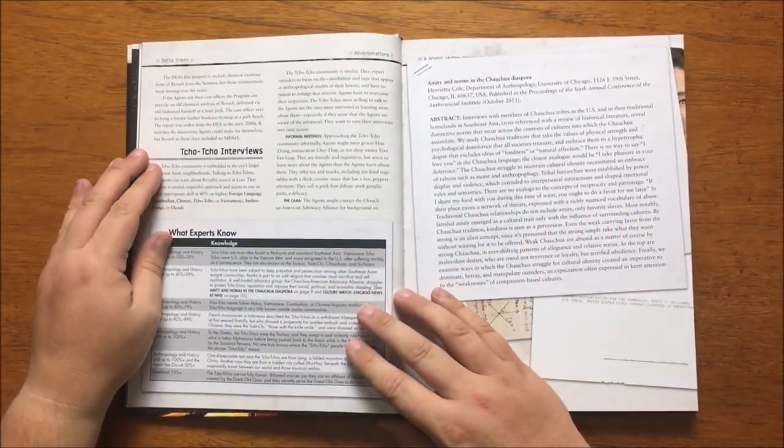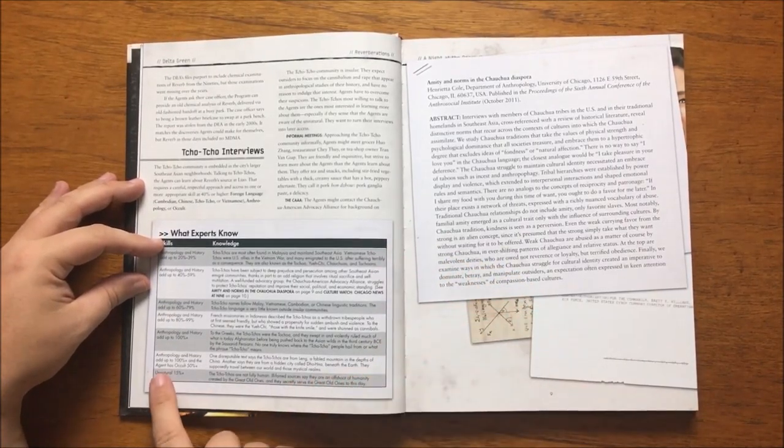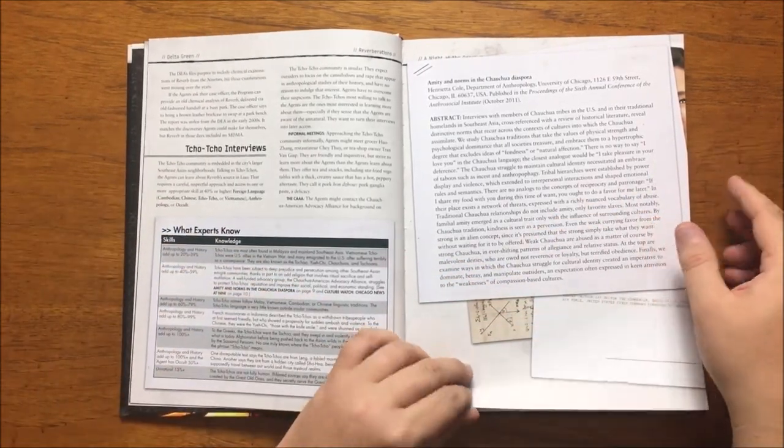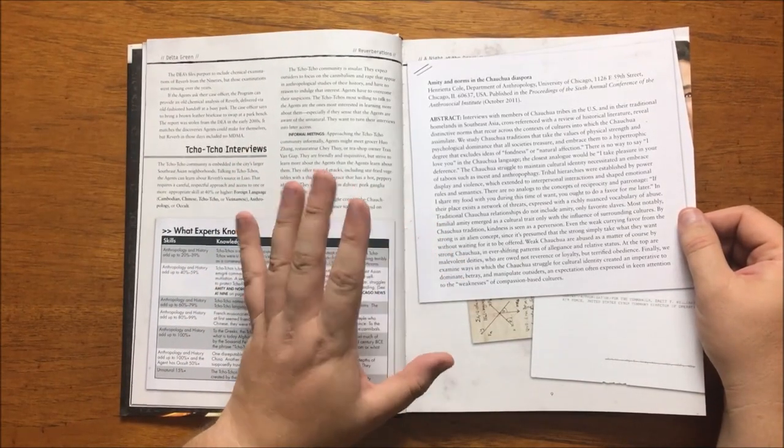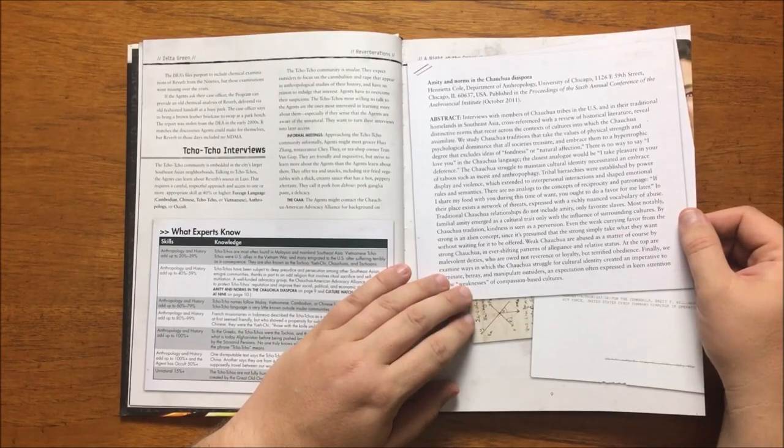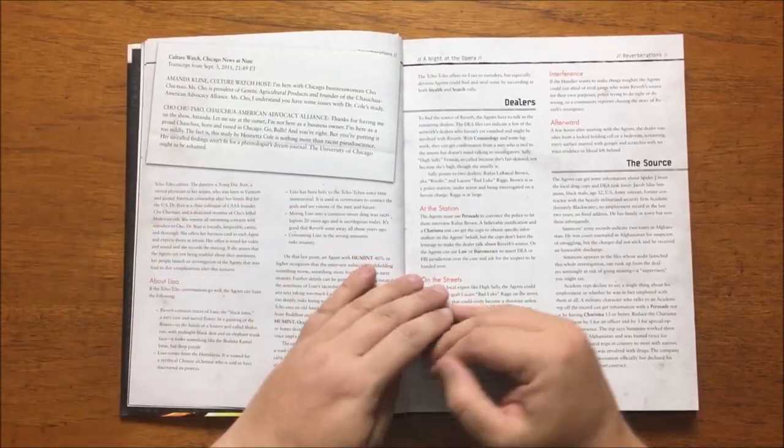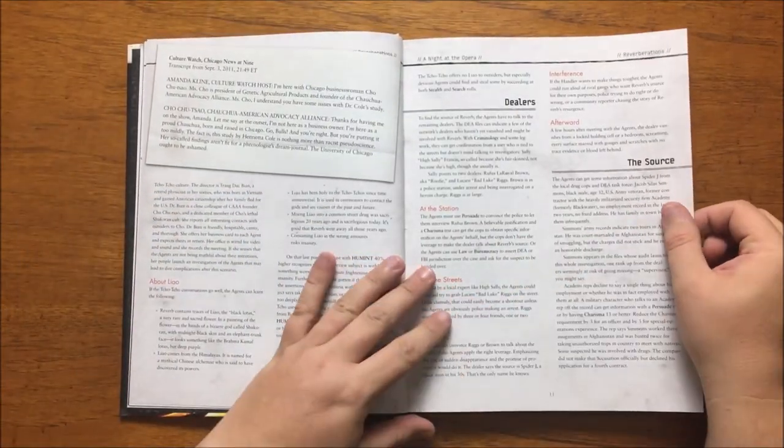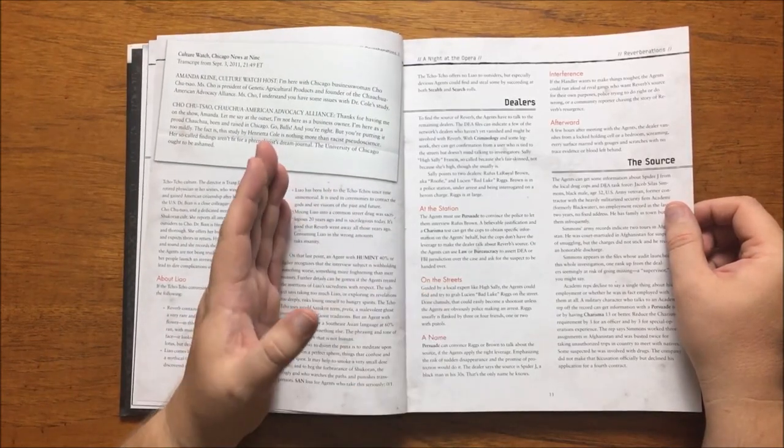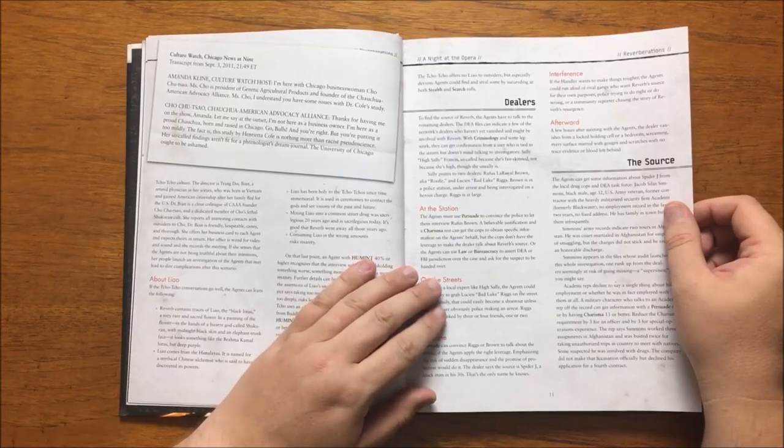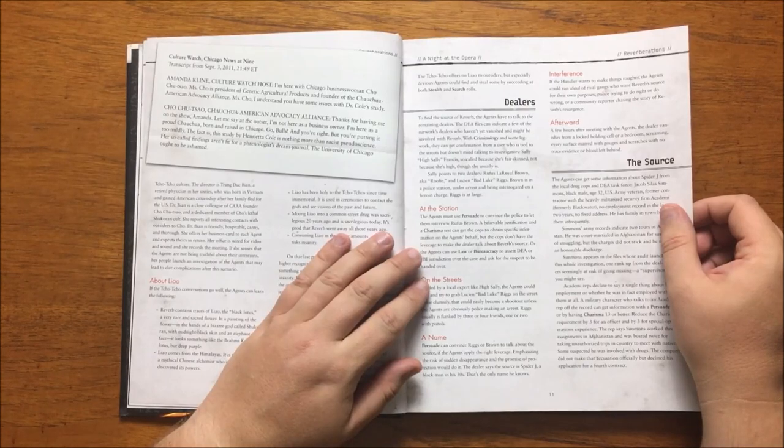Next, it moves on to the Cho Cho. It gives us a table as to what the agents know depending on both their history and anthropology skills, and also their unnatural. They also reprint a piece from the Handler's Guide about the Cho Cho, which discusses their frankly disturbing society. It gives details on obtaining an interview with people in the Cho Cho community who are insular and suspicious of outsiders. They can eventually get an interview with Trang Duk Bian, a retired doctor in her 60s. She is, unbeknownst to the players, a member of the Shukaran cult and a close associate of CAA founder Cho Cho Sao. She seems friendly and hospitable, but also canny and thorough. She secretly records her meetings with the agents.